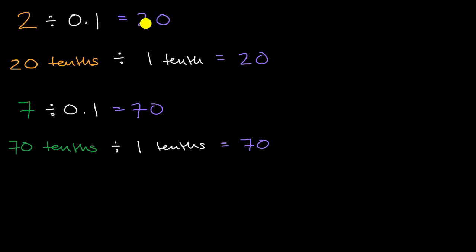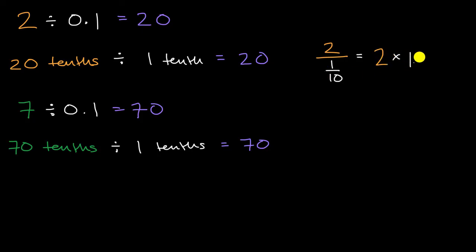You might notice a pattern. There are other ways we could have approached this. We could say two divided by one tenth is the same thing as two over one tenth. When you divide by a fraction, that's the same thing as multiplying by the reciprocal. So this is the same thing as two times 10, which equals 20. When you divide by a tenth, it's the same thing as multiplying by 10 — same thing happened with seven divided by a tenth giving us 70.